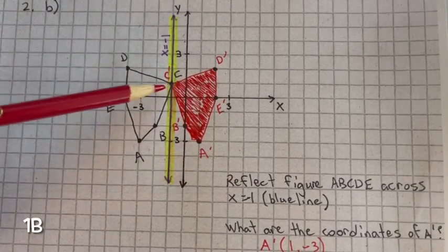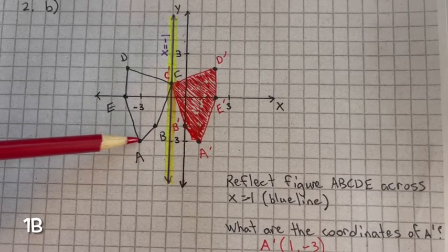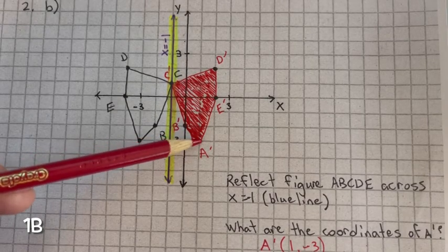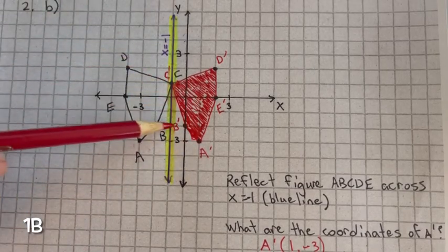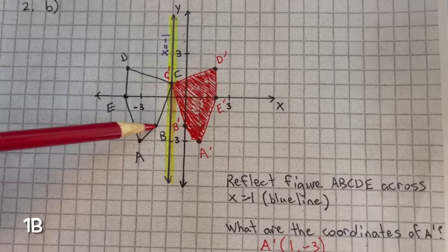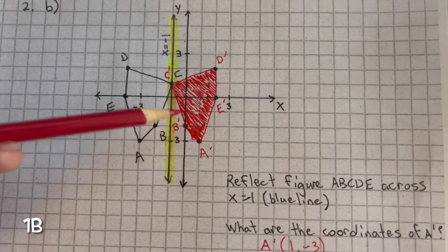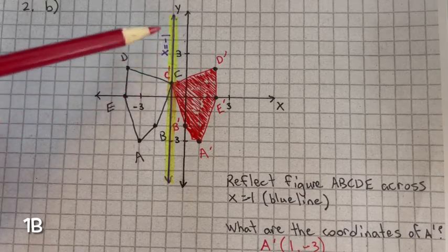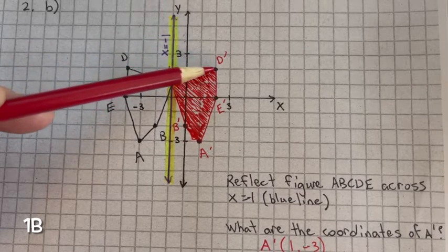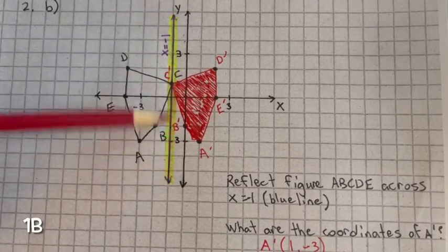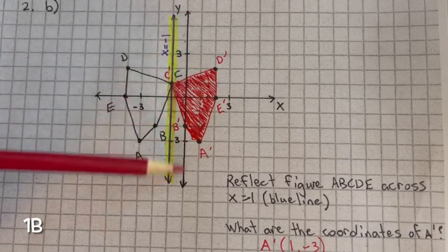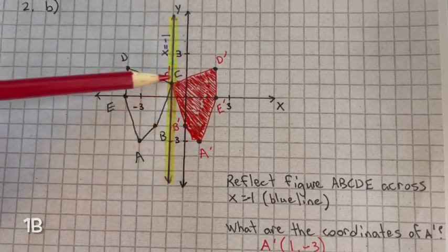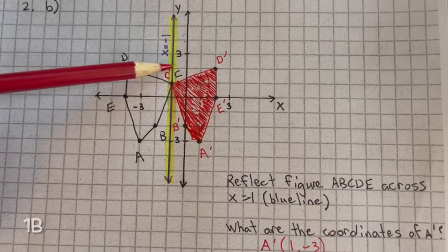So this is our line of reflection. A is negative 2 from the line of reflection, so a prime is positive 2 units to the right. B is 1 unit to the left from the line of reflection, so b prime is 1 unit to the right. C is on the line of reflection, so c and c prime share that vertex. D is 3 units to the left, so d prime is 3 units to the right. It's very important to highlight this so you don't mix it up with the y-axis.